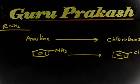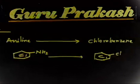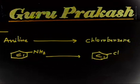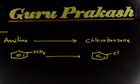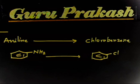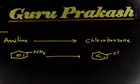This is a conversion: you have to convert aniline to chlorobenzene. This is an easy problem. You can use the diazonium reaction — first form the diazonium cation, and then use a copper salt to get the C-Cl bond. If a copper salt is used, it is called the Sandmeyer reaction.